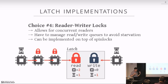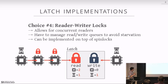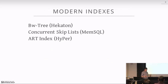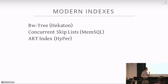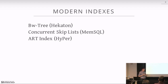That's basically how you do latching. Now, having covered index locking at the leaf level last class, we're going to talk about how to do OLTP indexing without any latches at all. The BW tree and concurrent skip list are latch-free indexes actually used in production. The ART index, which is a Radix tree, is not latch-free as far as I know, but we'll cover it as well.